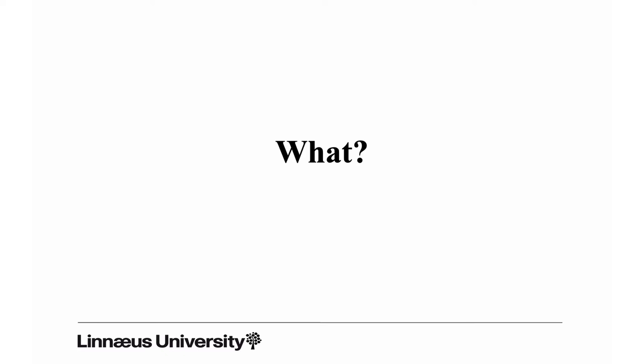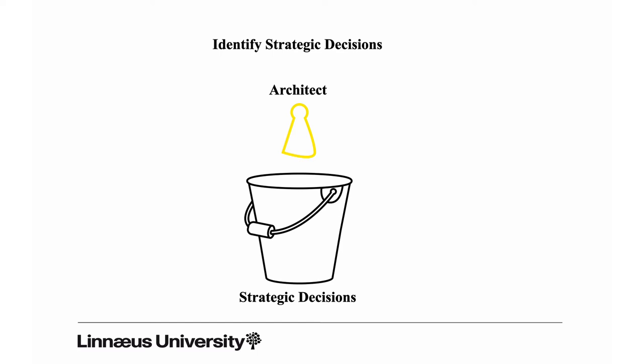The important task for software architects is to make strategic decisions that are important for a large part or the whole software system. These strategic decisions — we can illustrate it with a bucket full of them. The most important task in any project is to identify these decisions so that you know you are making the right ones and don't forget about important decisions. So, where should you start looking for these decisions, and how do you recognize them?